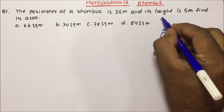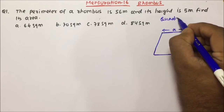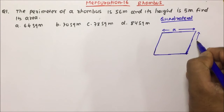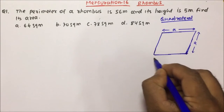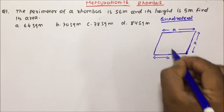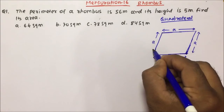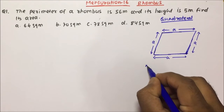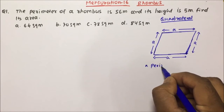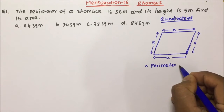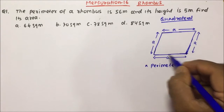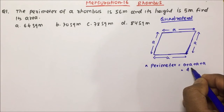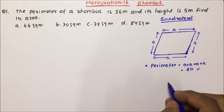Rhombus is a quadrilateral whose all four sides are equal to each other — this side is a, this side is a, this side is a, and this side is also a, because all four sides are equal. Now if I ask you the perimeter of rhombus, it will be a plus a plus a plus a, so perimeter equals 4a.